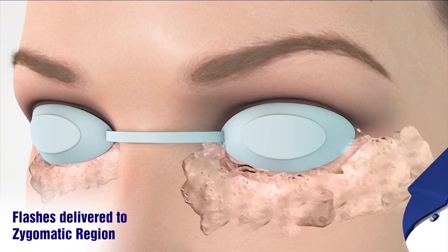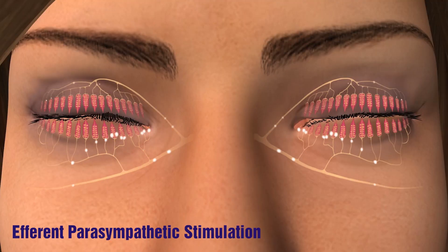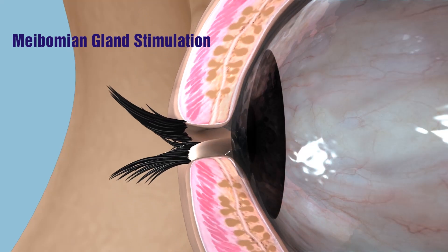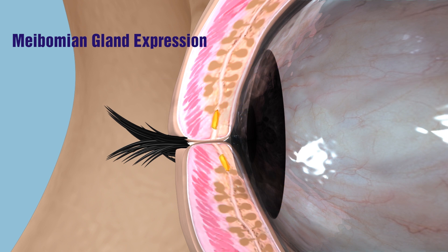Five flashes on each side. Our hypothesis is that this increases the secretion of meibum and aqueous by stimulation of a parallel pathway involving the zygomatic nerve, which increases the parasympathetic outflow to the meibomian and lacrimal glands. Eventually, meibomian gland expression causes restoration of the lipid layer and reduced dryness.